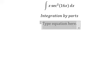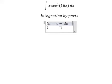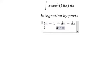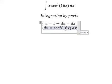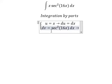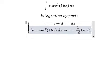I will put u equals to x, du equals dx. For dv we have sec squared of 16x dx. So the integration of this one, we have v equals to 1 over 16 tan of 16x.